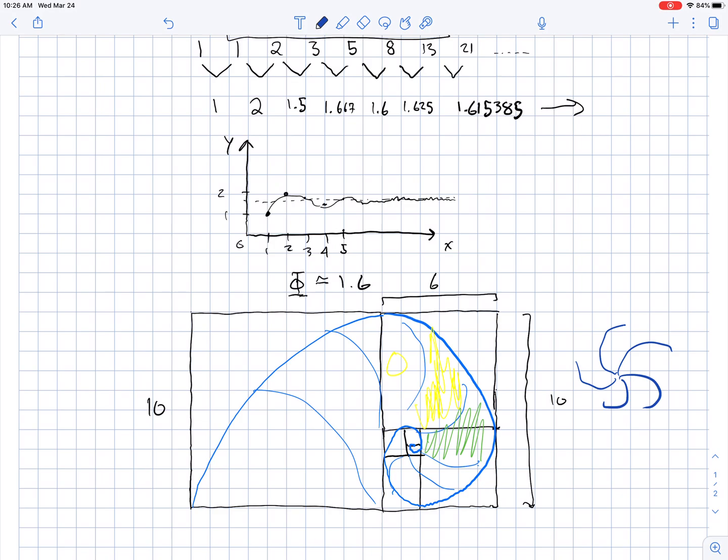One last example I'll give you is if you hold your arm out, the length of the entire arm, if you break the forearm, the two parts of the arm, the length of the entire arm is roughly 1.6 times the length of the shorter part of your arm. I think I got that right. It's something like that.